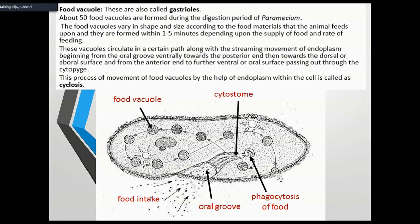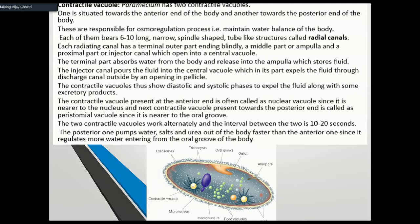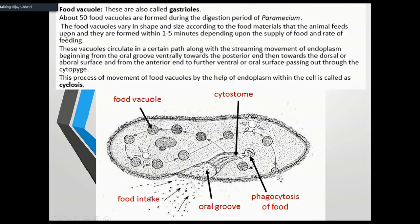Now we have the food vacuole, also called the gastriole. The contractile vacuole is permanent, whereas the food vacuole is temporary. There are about 50 food vacuoles in the body at any time.